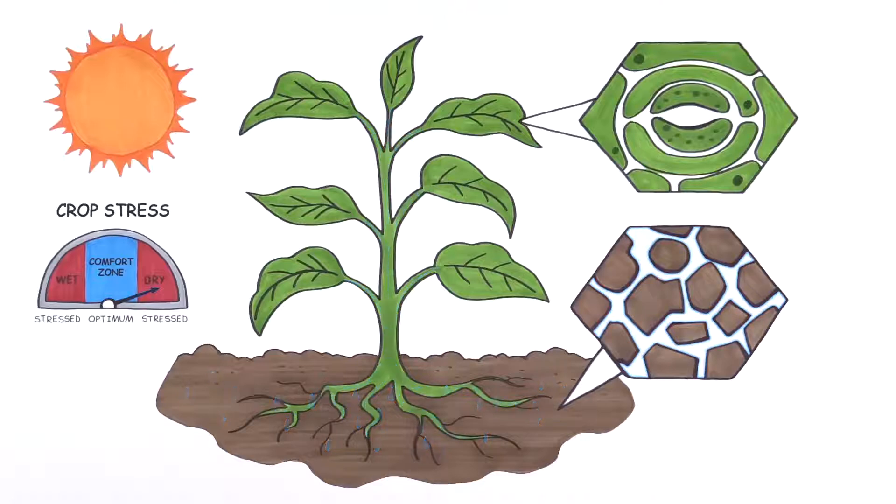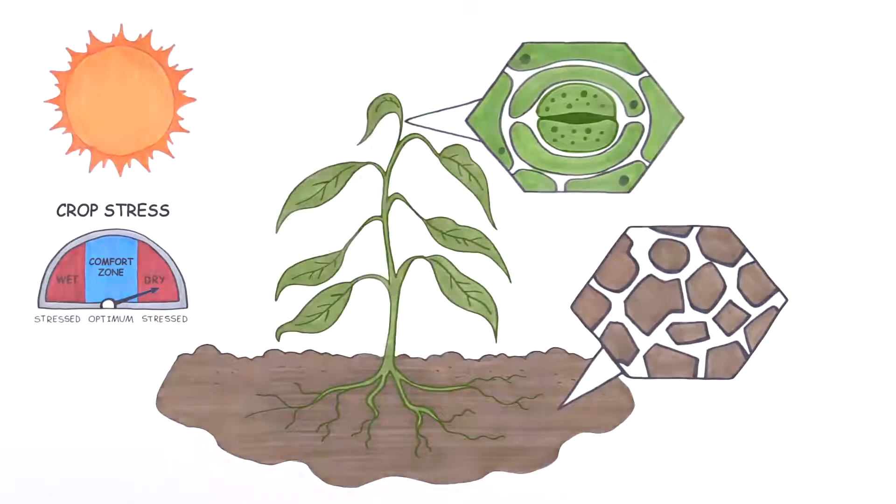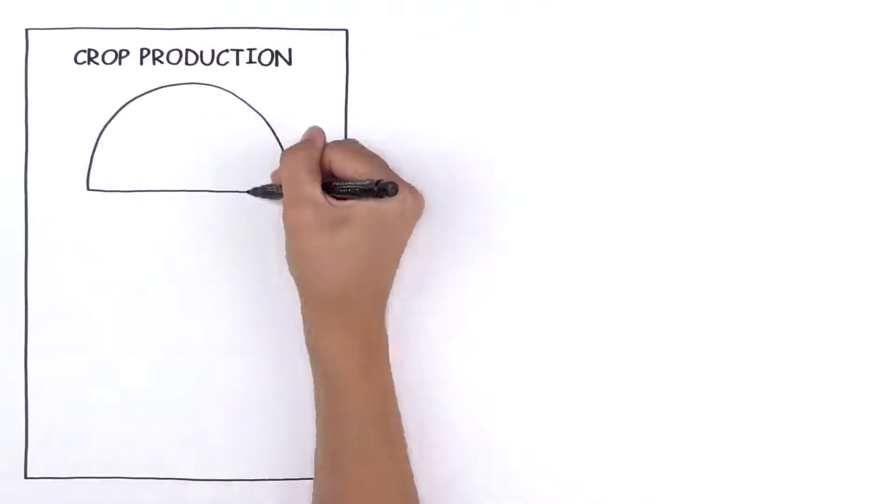When the root system can no longer extract water, it sends a signal to the leaves to shut the stomata and photosynthesis. At that critical point, crops stop producing, leading to yield loss. This reaction to stress can only be anticipated using soil tension.